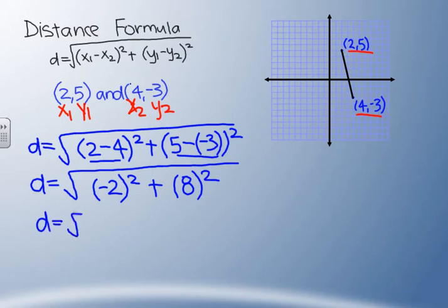So our next step now is to work with the exponents. So now we're going to take negative 2 and square it, which makes 4. Next, we're going to take 8 and square that, 64.